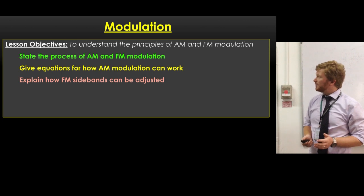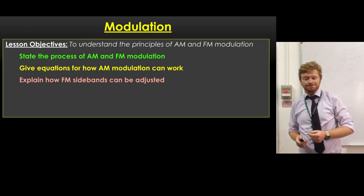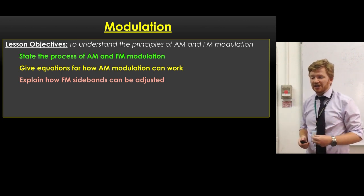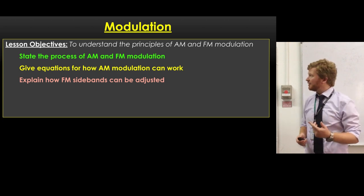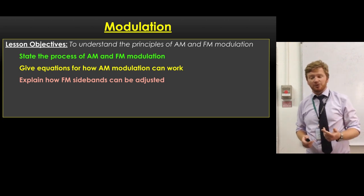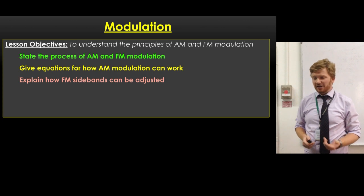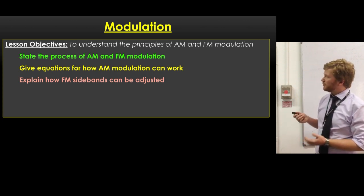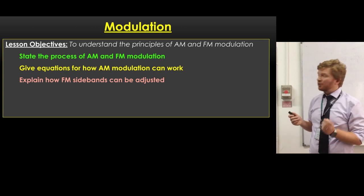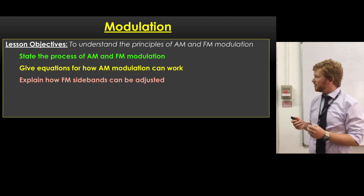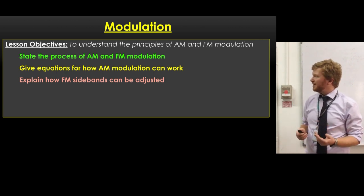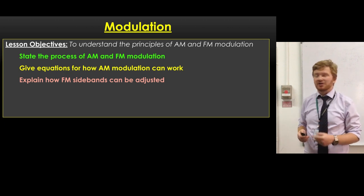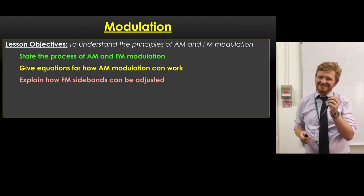So today we are going to be looking at modulation. Modulation is, there are two types, AM and FM, or amplitude modulation and frequency modulation, and we're going to understand what they are. We're going to start off by stating the process that is involved in AM and FM, then we're going to give equations for how they work, and then we're going to finish up with explaining how FM sidebands can be adjusted a little bit.